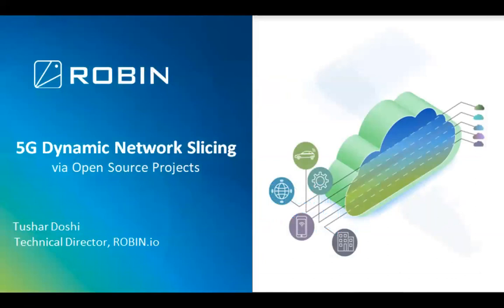Thanks Srini. I'm Tushar Doshi and I'm part of the orchestration team at Robin.io. Some of you might know that Robin.io is a platform of choice for Rakuten's 4G and 5G deployment, which includes deployment from near edge to far edge to central data center. Today I'll be talking about learnings we had by building this overall ecosystem with the help of various open source projects including Kubernetes, and the challenges — which you can extrapolate to when we are actually implementing dynamic slicing on top of it.